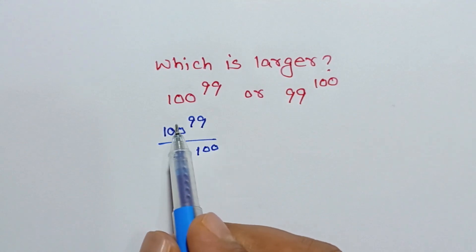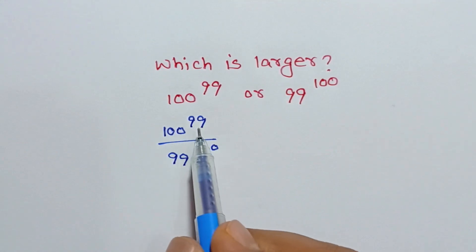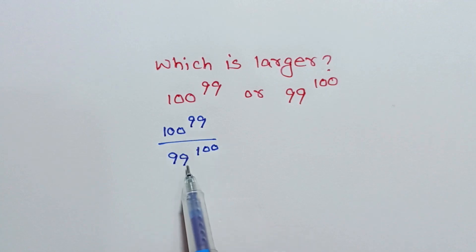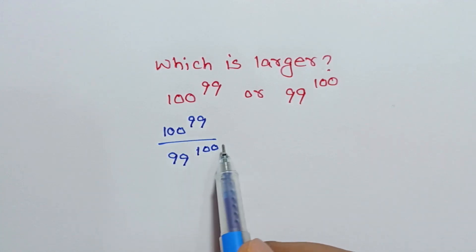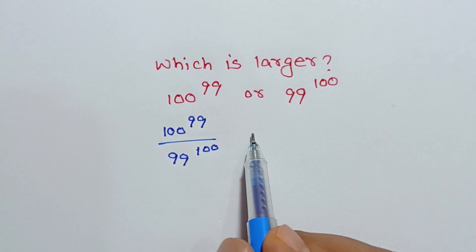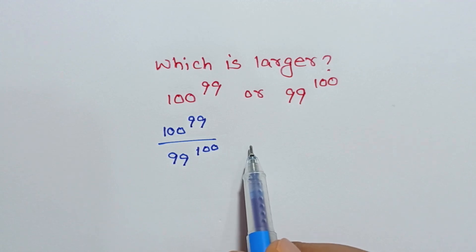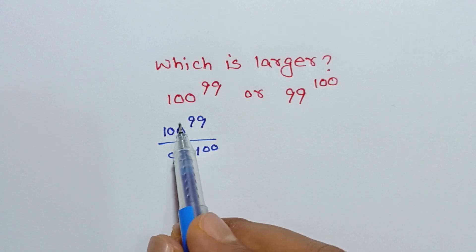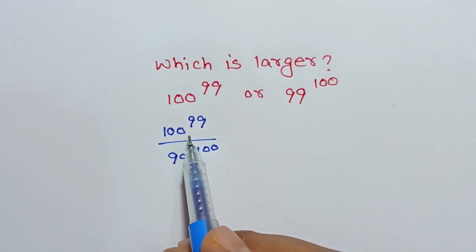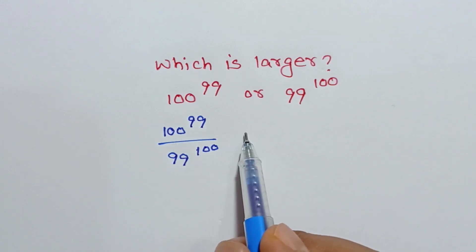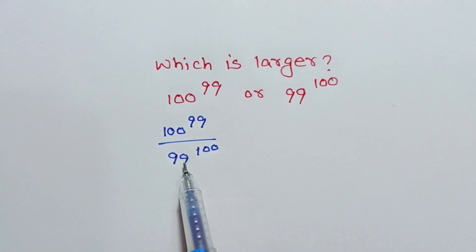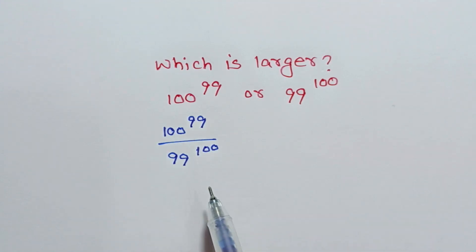If this result is greater than 1, then the numerator is greater than the denominator. Or if this value is less than 1, then the denominator is greater than the numerator. Or if this is equal to 1, the numerator and denominator are equal.